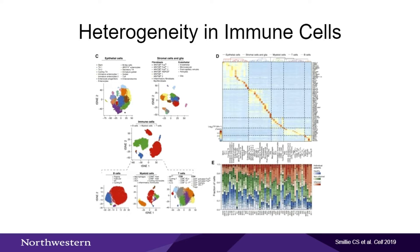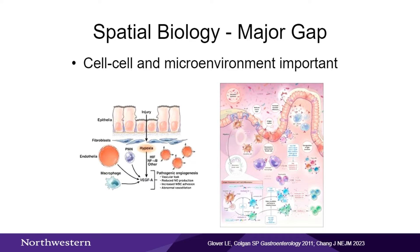A reference atlas published in 2019 helps define the huge heterogeneity in immune cell populations in ulcerative colitis and Crohn's disease, which is a major factor in heterogeneity in treatment response. The single cell work done to date has been instrumental in biological discoveries. However, there is a major gap in the IBD space because dissociated single cell work has not been able to put this in spatial context. Mucosal hypoxia, dysregulated angiogenesis, and cell-cell interactions in the microenvironment are extremely important for understanding biology in IBD and driving discovery.